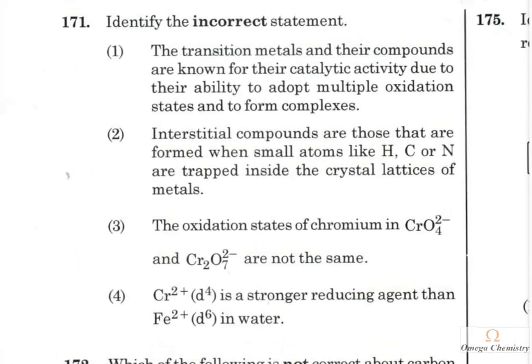Question 163: Identify the incorrect statement. Transition metals are known for catalytic activity due to multiple oxidation states (correct). Interstitial compounds form with smaller atoms like hydrogen trapped inside the crystal (correct). The oxidation state of chromium in CrO₄²⁻ and Cr₂O₇²⁻ — in both cases chromium is +6, so the statement that they are NOT the same is wrong. That is the incorrect statement, which is the correct answer.